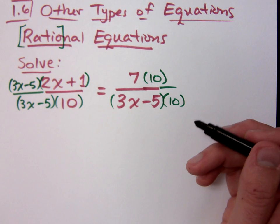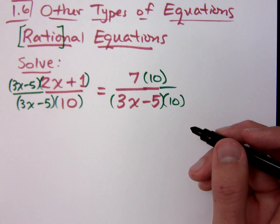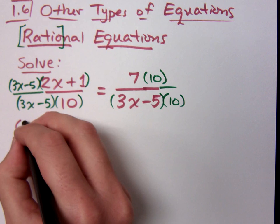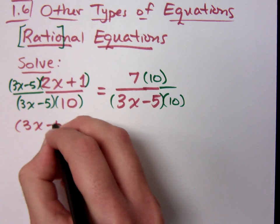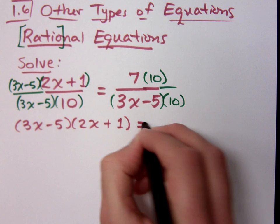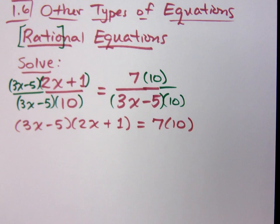Since I have an equation, I can set the numerators equal to each other. So that means I could just write this: 3x minus 5 times 2x plus 1 is equal to 7 times 10. I don't have the denominators to worry about now. I just have to multiply this out, solve this, do whatever I need to.